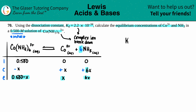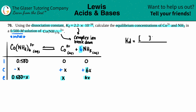Like any K expression, Kd equals the concentration of products over reactants. We have two products and one reactant: Kd = [Co³⁺][NH₃]⁶ / [Co(NH₃)₆³⁺]. Remember to raise NH₃ to its coefficient of 6. The Kd value given is 2.2 times 10 to the negative 34th.